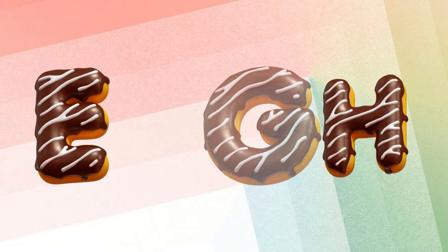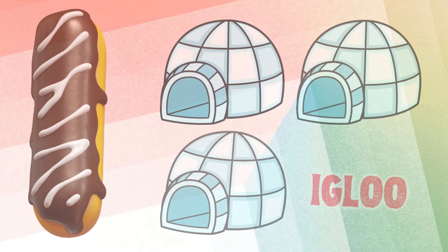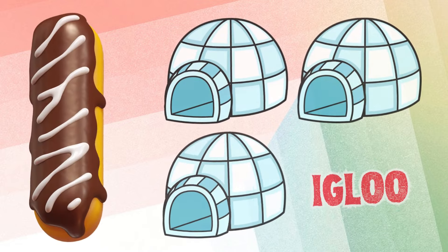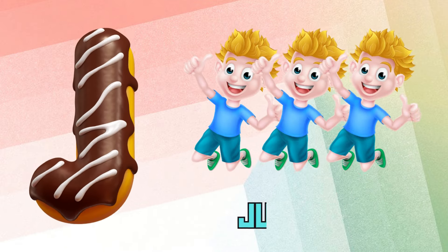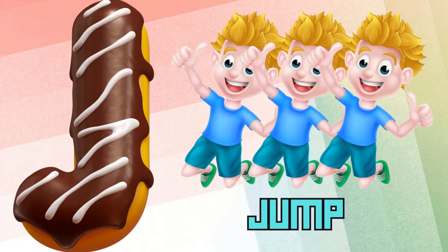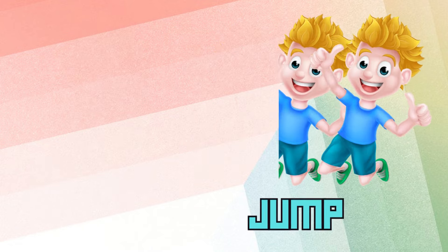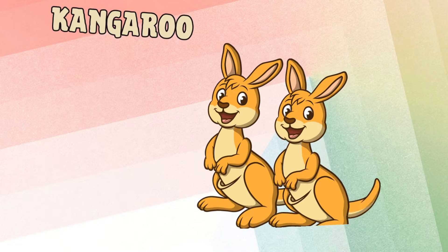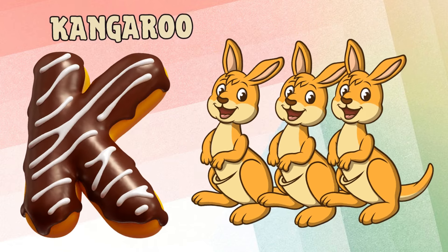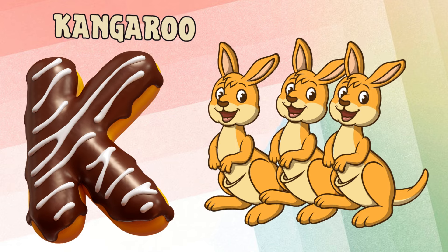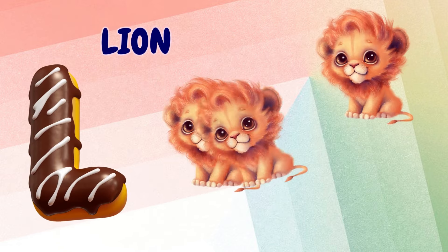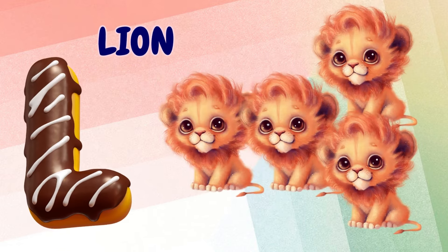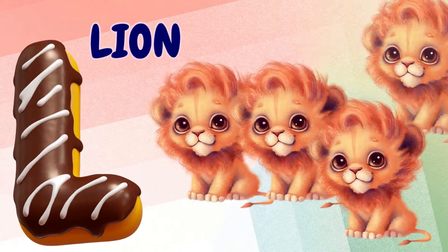I is for igloo, i-i-igloo. J is for jump, j-j-jump. K is for kangaroo, k-k-kangaroo. L is for lion, l-l-lion.